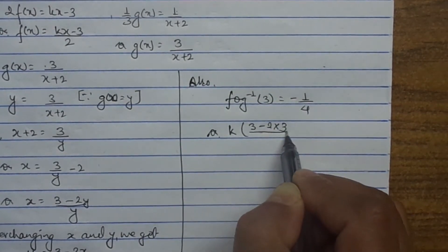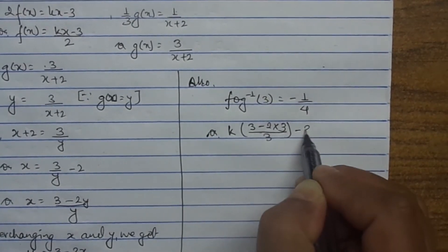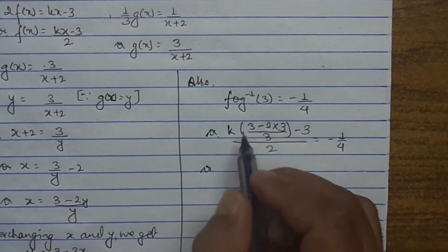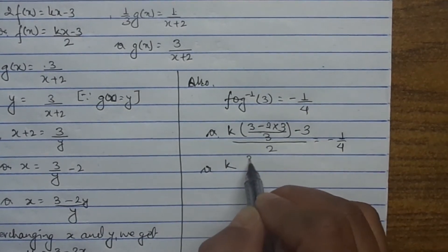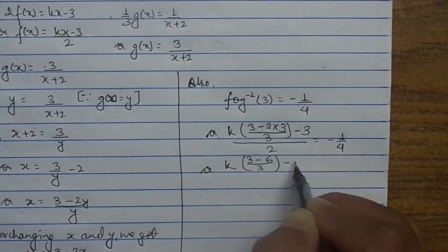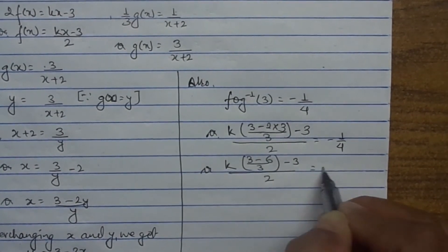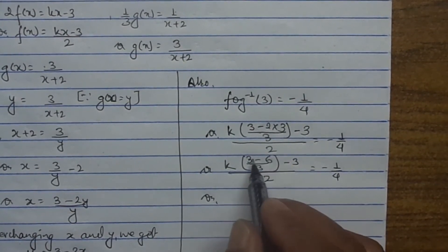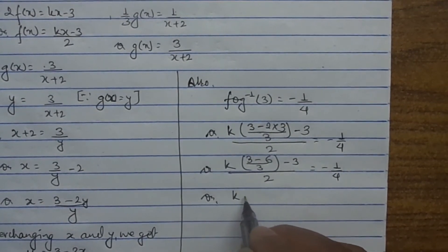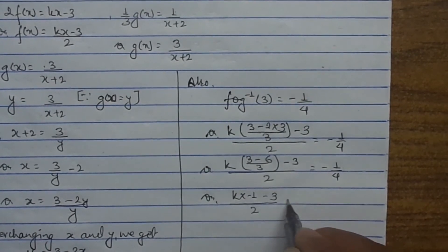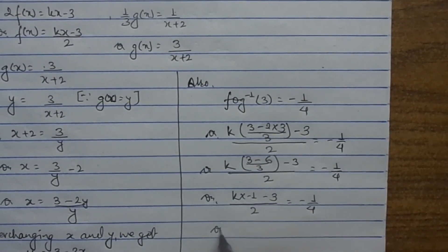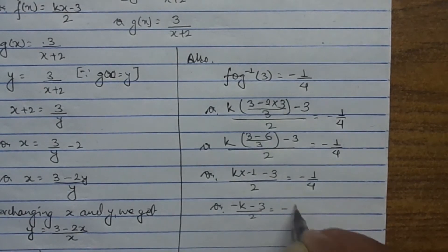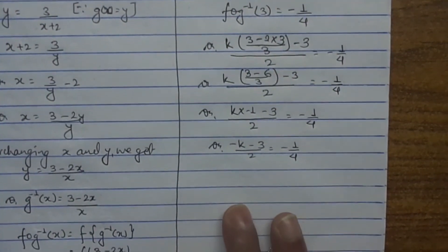With x equals 3: k times (3 minus 2×3) divided by 3, minus 3, all divided by 2 equals minus 1 upon 4. That gives k times (3 minus 6) divided by 3, minus 3, divided by 2 equals minus 1 upon 4. Since 3 minus 6 is minus 3, and minus 3 divided by 3 is minus 1, we get k times (minus 1) minus 3, all divided by 2, equals minus 1 upon 4. This simplifies to (k·(minus 1) minus 3) divided by 2 equals minus 1 upon 4.